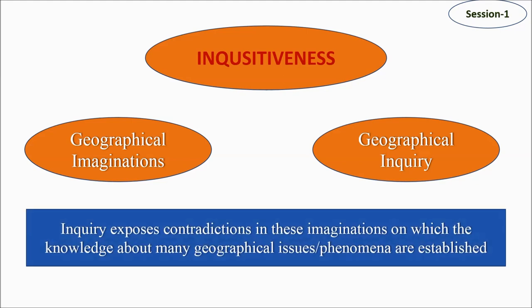These three I's — inquisitiveness, imagination, and inquiry — are the three pillars of fieldwork and research methodology. They are important because inquiry exposes contradictions. The world is not fair; it's not black and white. There are many contradictions in phenomena, in the understanding of spaces, cultures, and people. Inquiry helps these contradictions get exposed in geographical imaginations on which knowledge about geographical issues and phenomena is established.